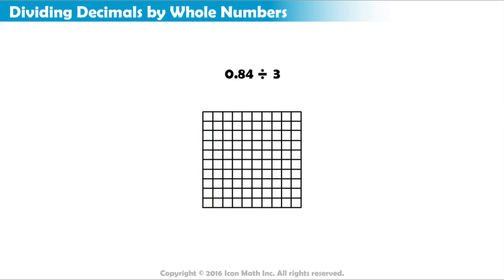We will begin by dividing 84 hundredths by 3. Let's represent the dividend 84 hundredths on the array. 84 hundredths equals 8 tenths and 4 hundredths. So we will shade 8 columns and 4 squares.